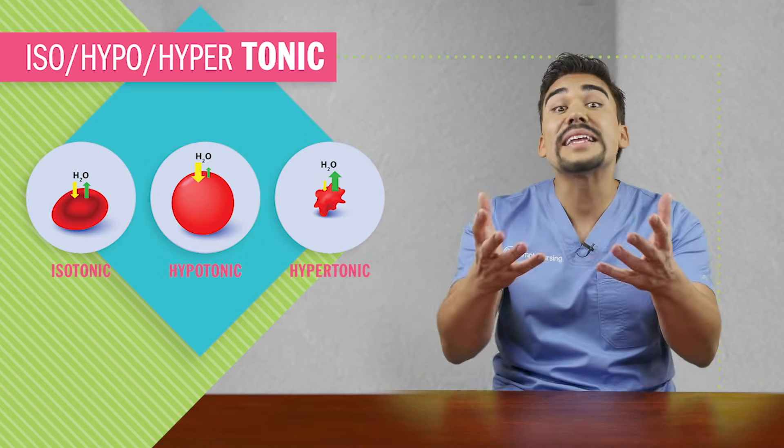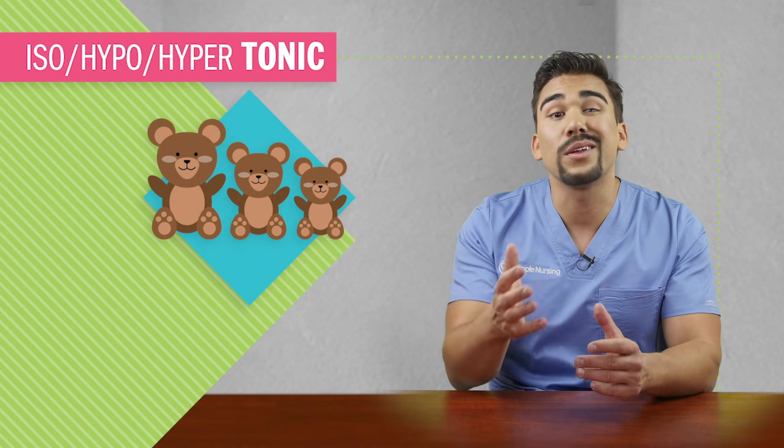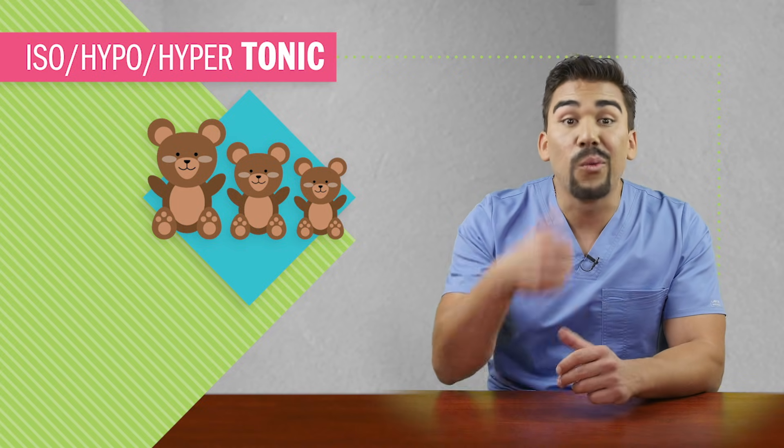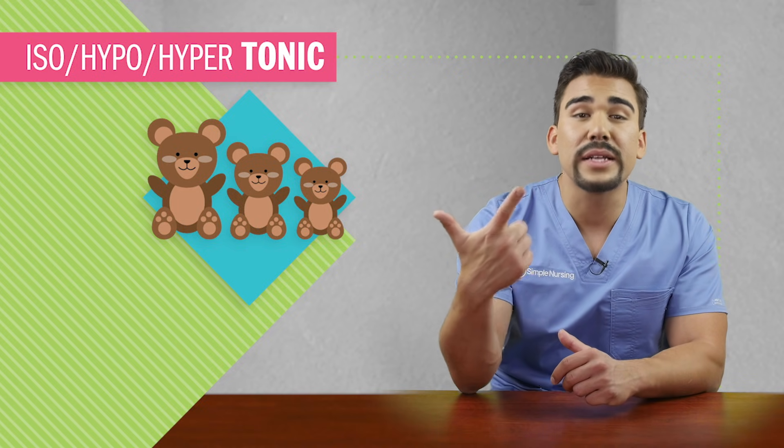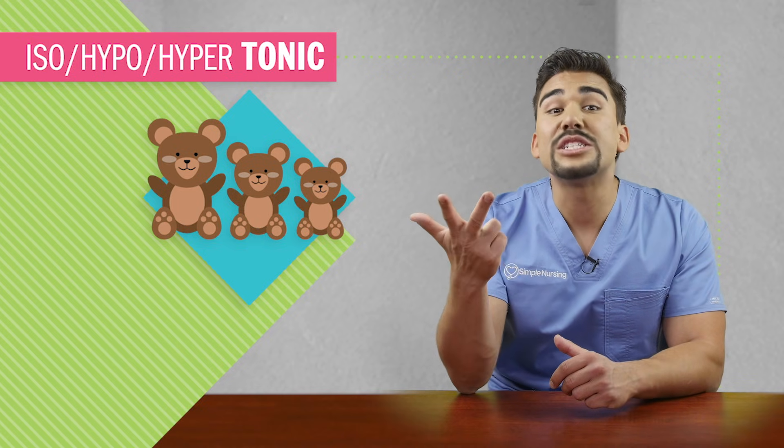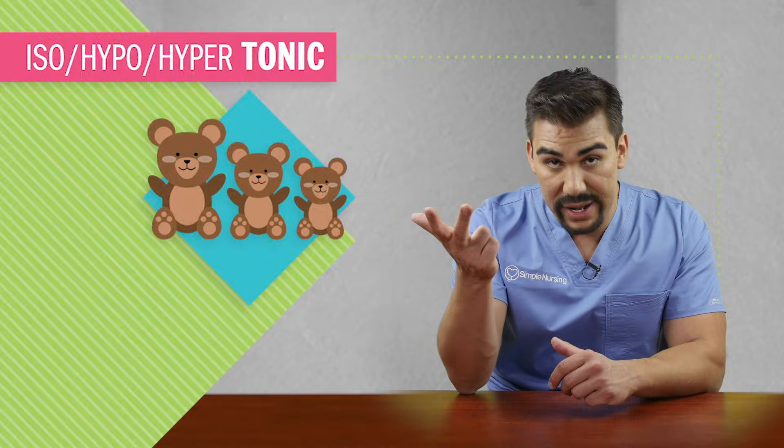They're kind of like the three little bears or the three little hippos. One is too much, one is too little, and one is just right.